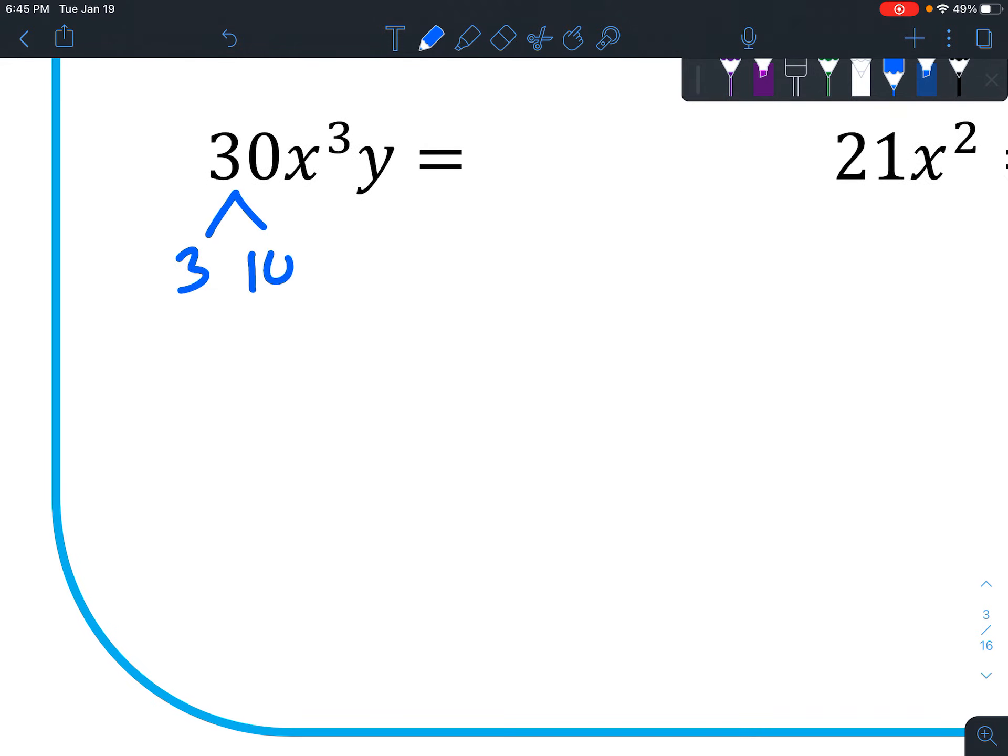Next we have 3 times 10. 10 is 2 times 5. That is as far as we can go with that. So we've got 2 times 3 times 5, x, x, x. Whoops, didn't mean to put a y there. 3 x's and 1 y.